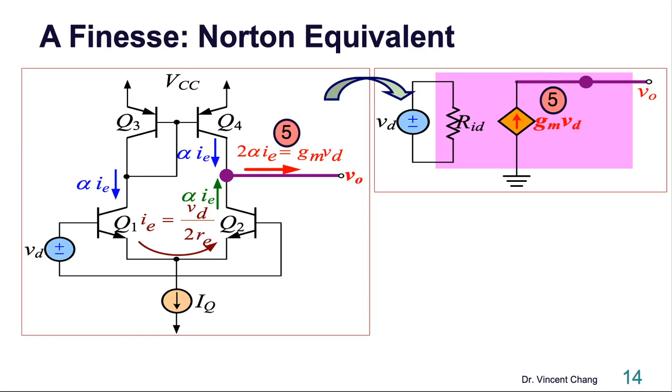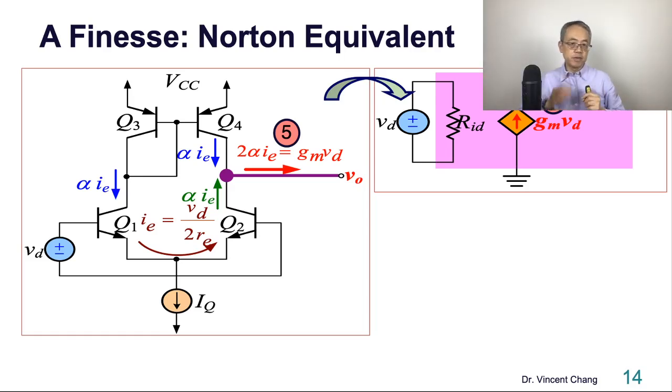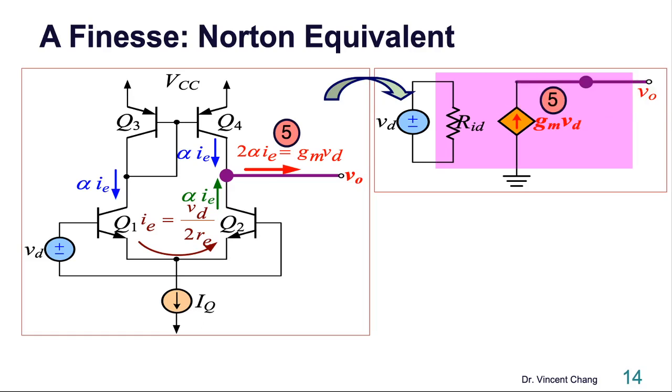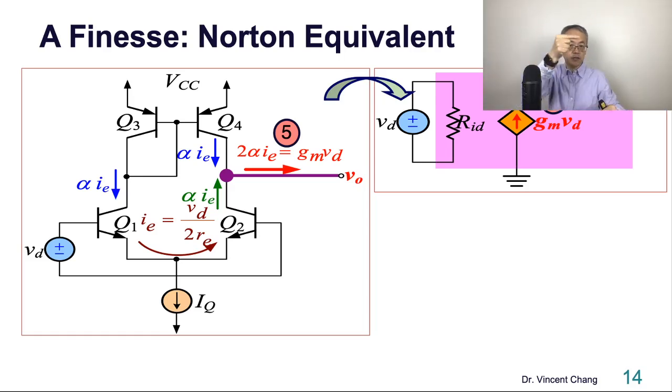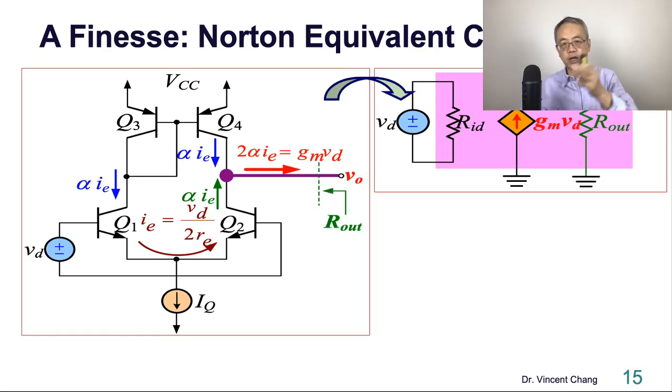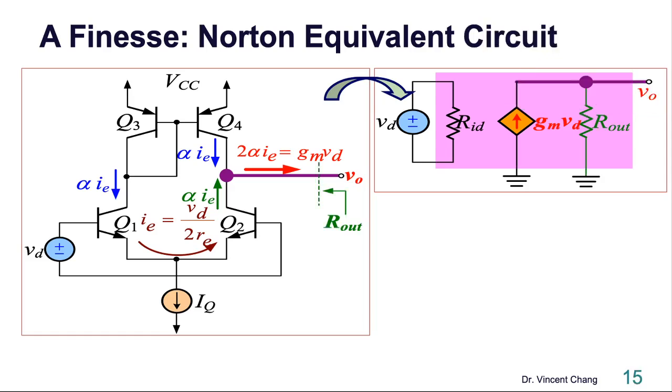Norton, what does that mean by Norton? A current source in parallel with an output resistance. So you can simply copy and paste the number 5 current and paste on the right: gm VD. Pay attention to the direction. Flowing into the VO is this direction, and then in parallel with an output resistance.